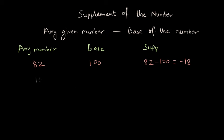What about the number 13? In case of 13 the base will be 10 and the supplement will be 13 minus 10 equals 3. What about if the number is 996? The base in that case is going to be 1000 and so the supplement will be 996 minus 1000 which is minus 4.